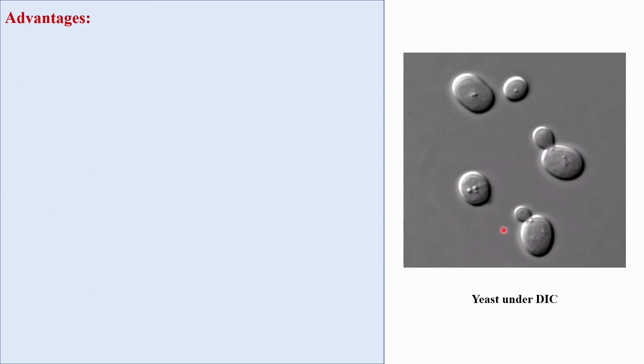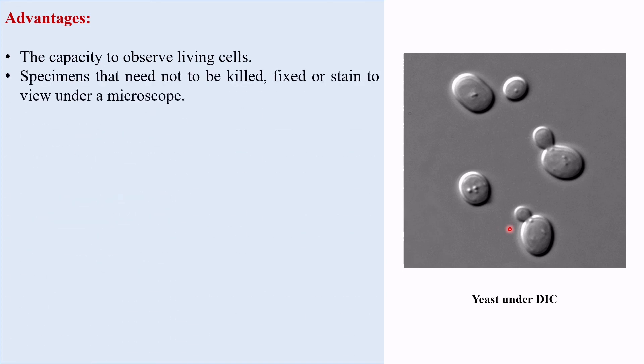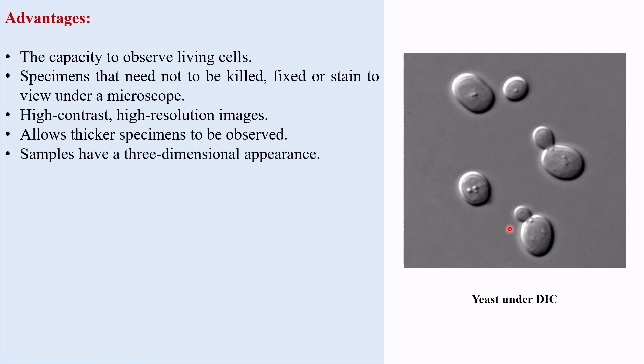The advantages of using DIC are the capacity to observe living cells, specimens that need not to be killed, fixed or stained to view under a microscope. High contrast, high resolution images will be formed. It allows thicker specimens to be observed. Samples have a three-dimensional appearance.